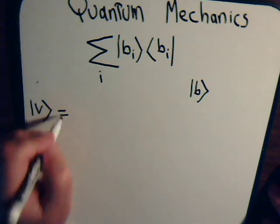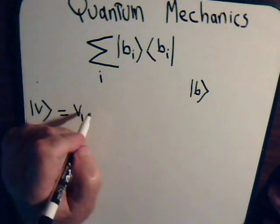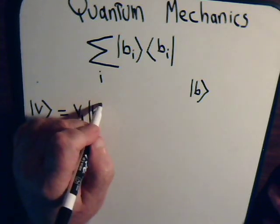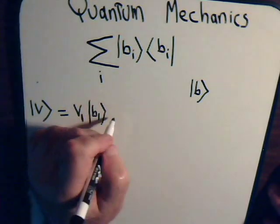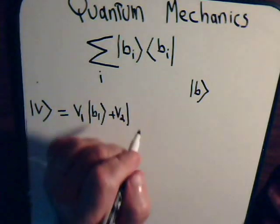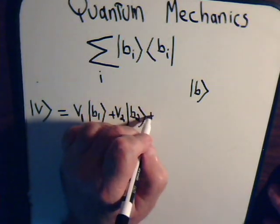It will have some coefficient, call it v1, times the first basis vector, plus another coefficient times the second basis vector, and so forth like this.